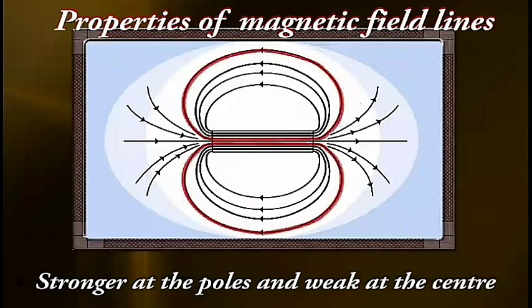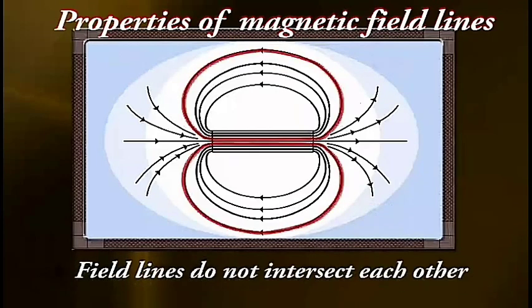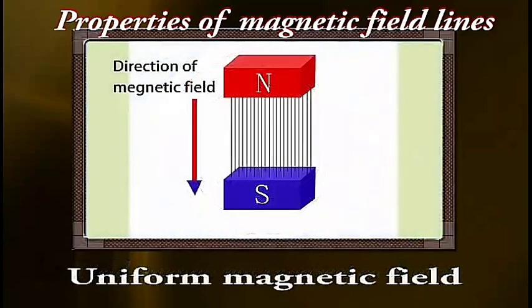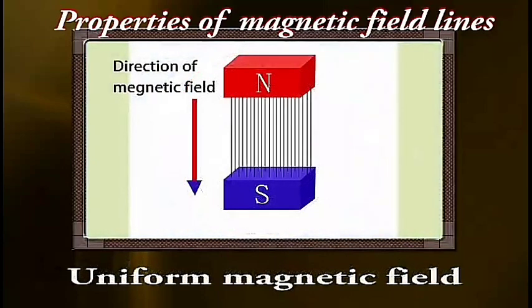The field lines never intersect each other because it would imply two directions of magnetic field at that point which is impossible. Parallel and equidistant field lines represent a uniform magnetic field.